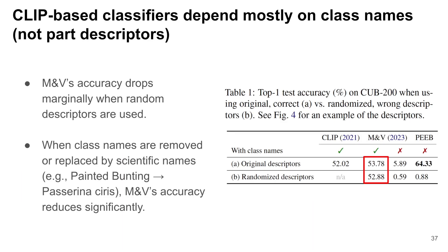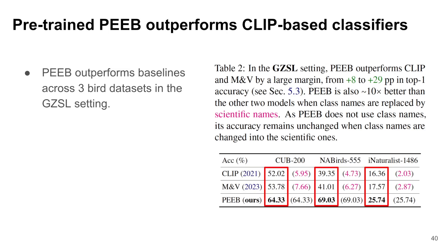CLIP-based classifiers depend mostly on class names, not part descriptors. When randomized descriptors are used, MNV accuracy drops marginally from around 54% to 53%, showing that descriptors play a minimal role in model predictions. When class names are removed or replaced by scientific names, MNV's accuracy drops significantly to around 6%, suggesting that when class names are unseen by CLIP, the model cannot leverage descriptors. For pre-trained PIP, when randomized descriptors are used, performance drops significantly from around 64% to 0.88%, indicating that PIP relies on matching between text and image parts.